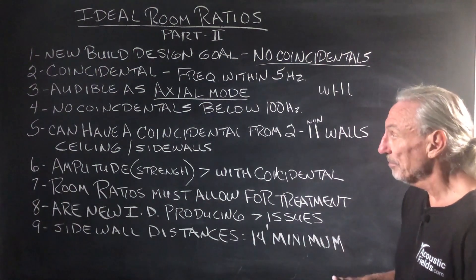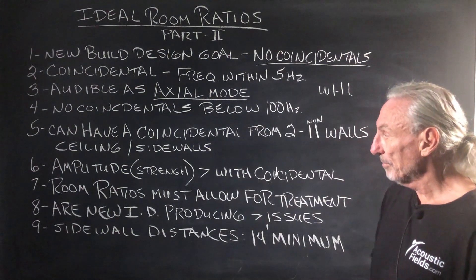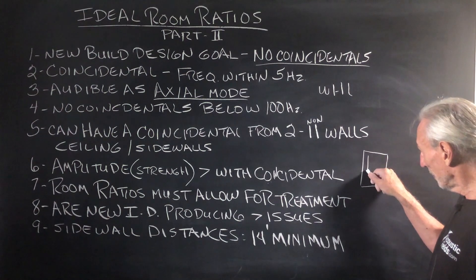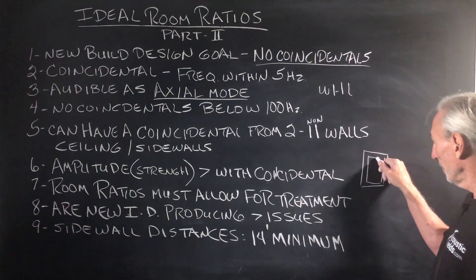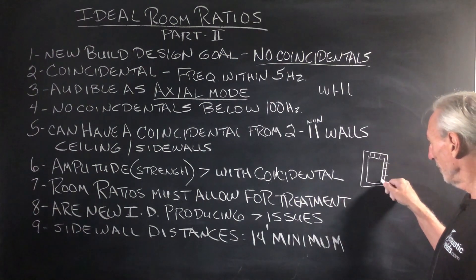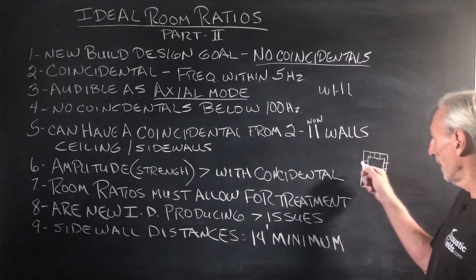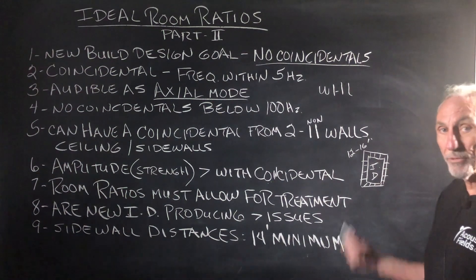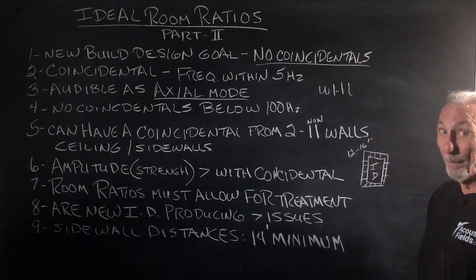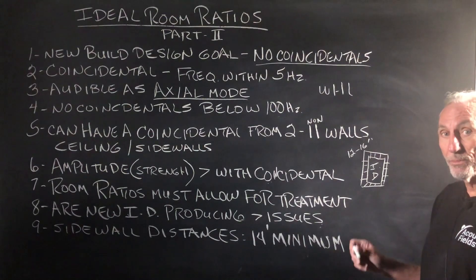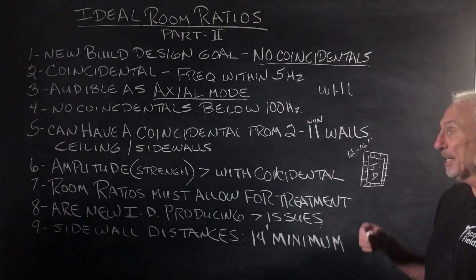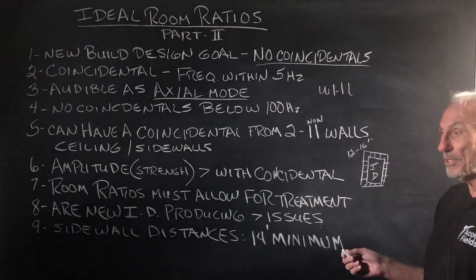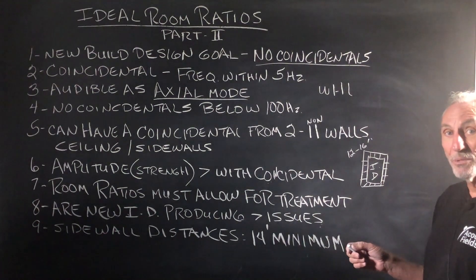Sometimes a foot here or there can make a huge difference. We don't want any coincidentals because they have real strength. These charts available on the internet don't account for the treatment requirements inside the room. They show axial mode distribution, but what about the new room you build inside your existing room that has 12 to 16 inches of treatment? Now you have a new internal dimension — what we call ID. After you're treated, is that going to produce more problems? We have to see. When we take room size ratios into consideration, we have to account for all variables: axial, tangential, and oblique modes, coincidentals, and usage. There is no one size fits all.